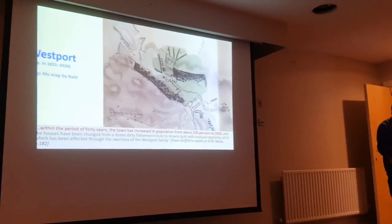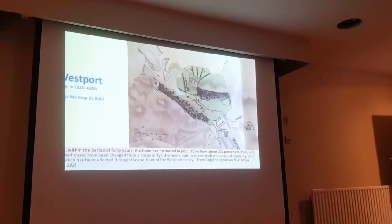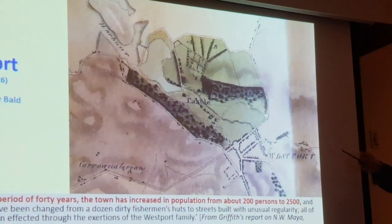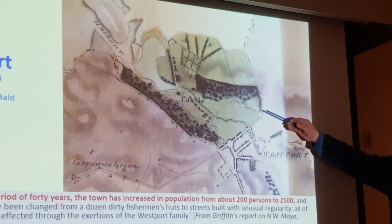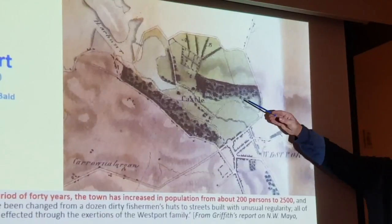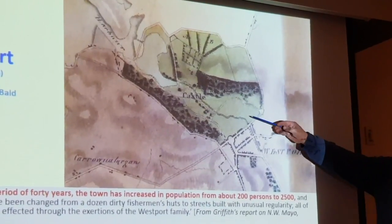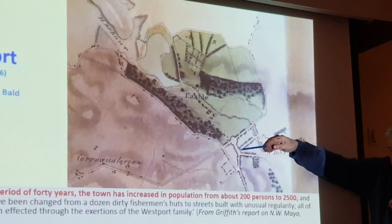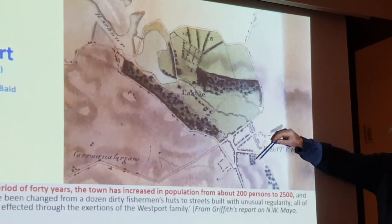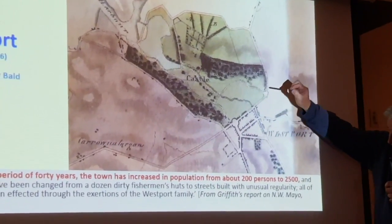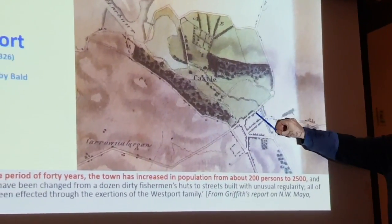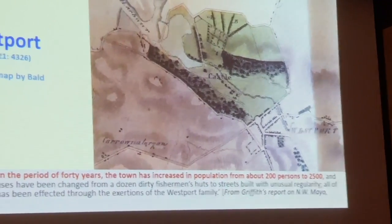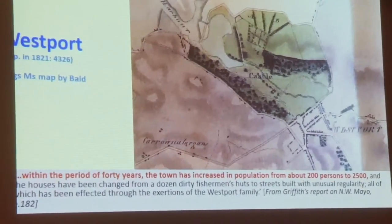Looking at Westport on the manuscript map, the domain comes up — he's painted it in green and shows the woodland areas of the domain quite well. The octagon and the Mall area come out very strongly on this particular plan.